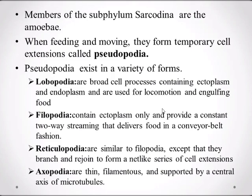The filopodia contain ectoplasm only and provide a constant two-way streaming that delivers food in a conveyor belt fashion. The reticulopodia are similar to filopodia except they are branched and rejoined to form a net-like series of cell extensions. The axopodia are thin, filamentous, and supported by a central axis of microtubules.